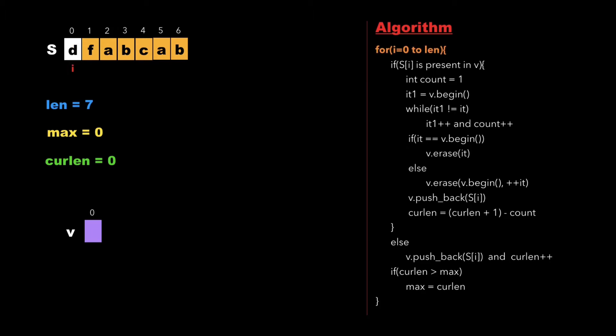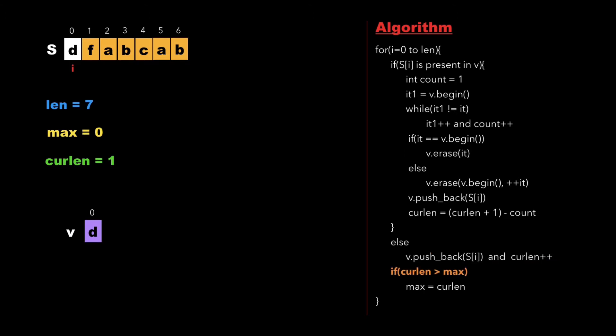We traverse the string from i equal to 0 up to the length of the string. Initially i points to character 'd'. We check whether 'd' is present in vector v - since it is not, we move to the else part, push 'd' into vector v, and increment current_length to 1. Since 1 is greater than 0, we update max to 1 and increment i. Now i points to 'f'.